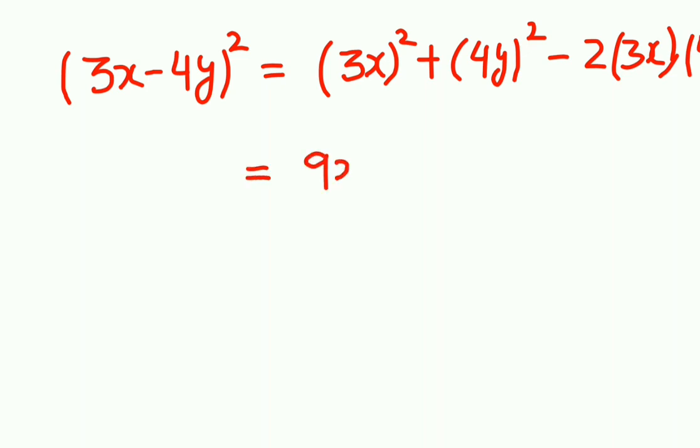Now 3x whole square is 9x square plus 16y square minus 24xy. Ab dhekhi, phir se alag-alag terms a gahi. X square hai, y square hai, xy. Koi bhi aap aapos me solve nai ho paenghe. Tho answer, yehi hemara final hai.